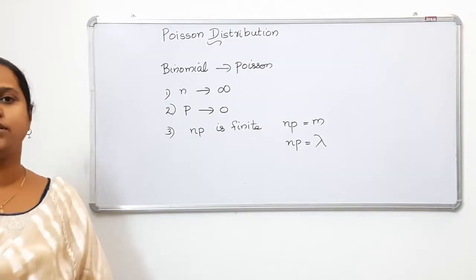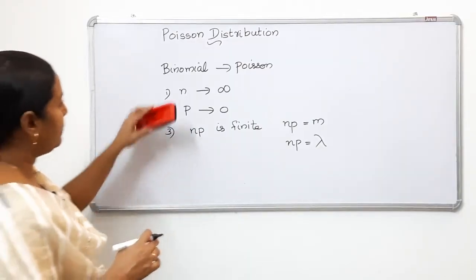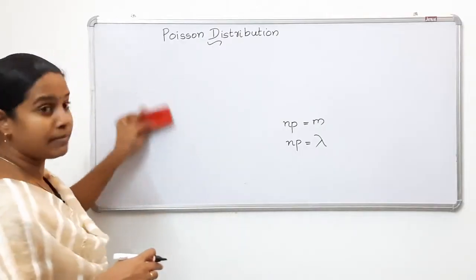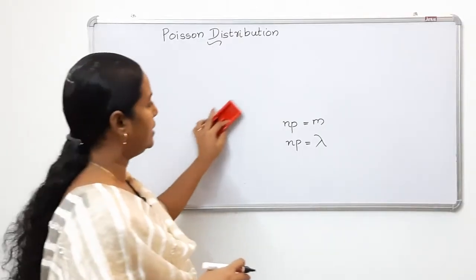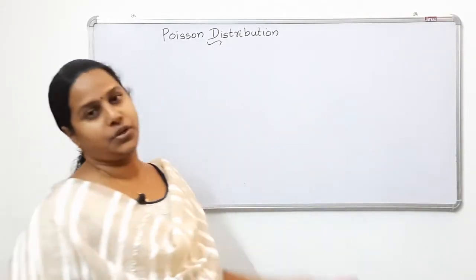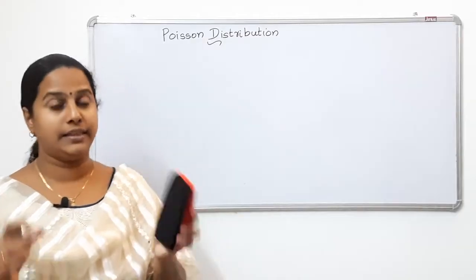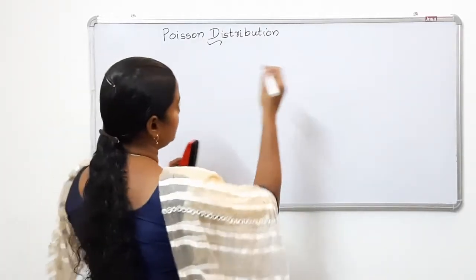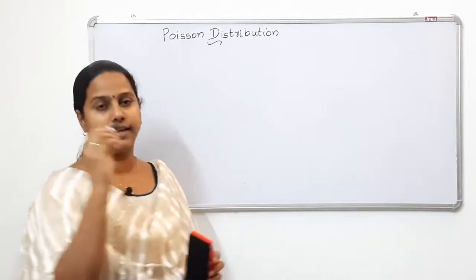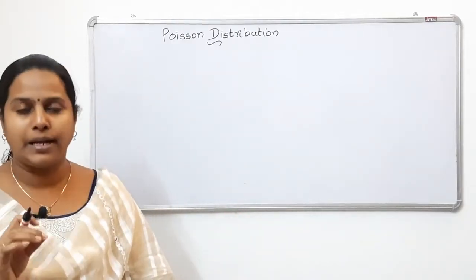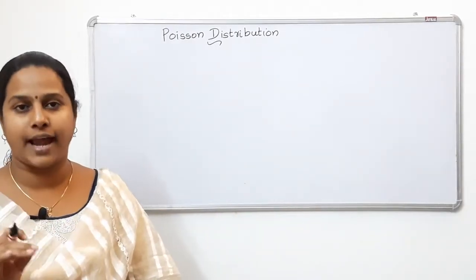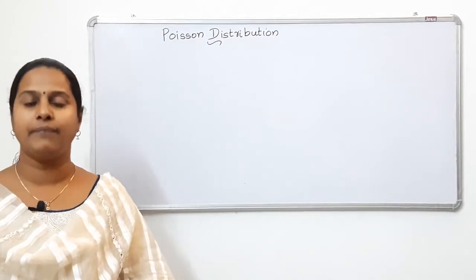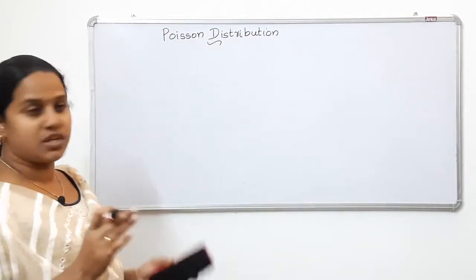We define the Poisson distribution. If you look at the discrete distribution, we learn about discrete uniform binomials. The Poisson distribution is discrete. So in our study, we have a discrete random variable.